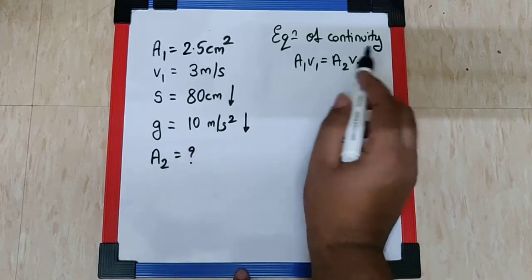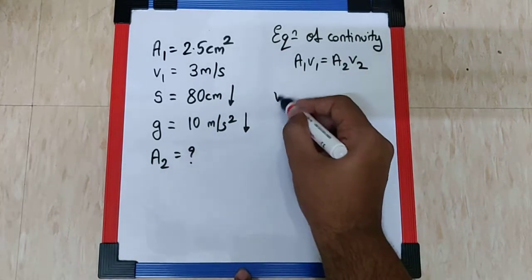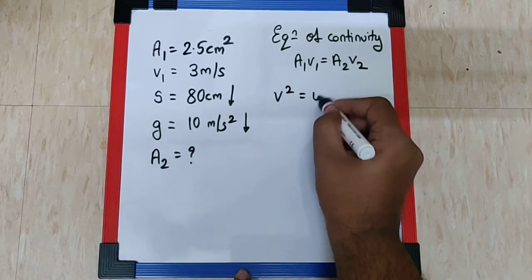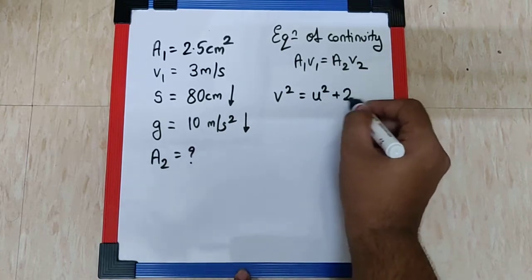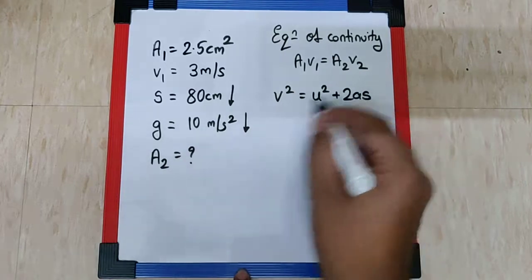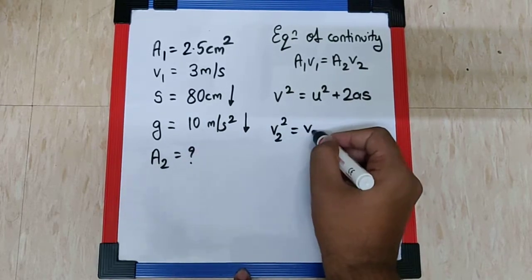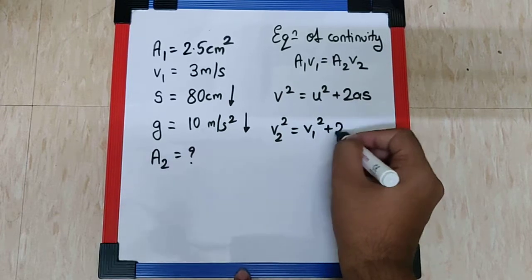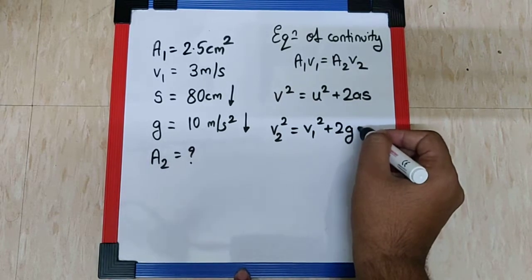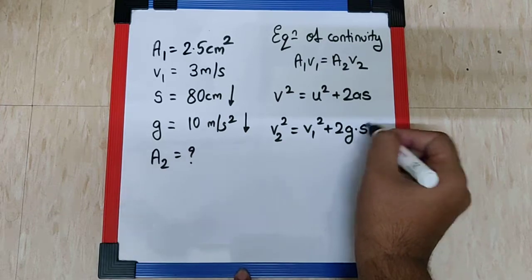And V2 we can calculate using a kinematical equation. V² = U² + 2AS. In this case the final velocity is V2, the initial velocity is V1, the acceleration is G, and the displacement is S.